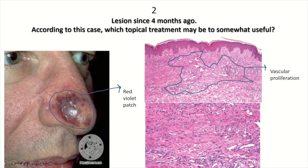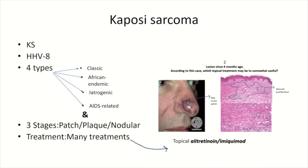Collagen bundles are separated by ectatic vessels, and there is sparse infiltration of lymphocytes and plasma cells. All these findings — vascular proliferation, separated collagen, and the red-violet patch — are indicative of Kaposi sarcoma, a borderline malignant vascular neoplasm.